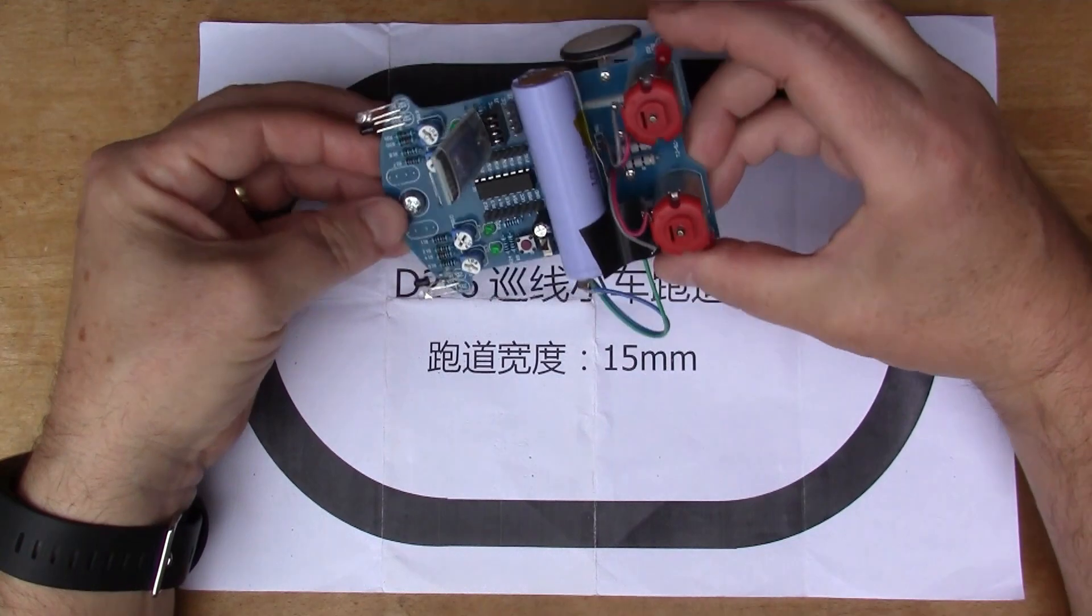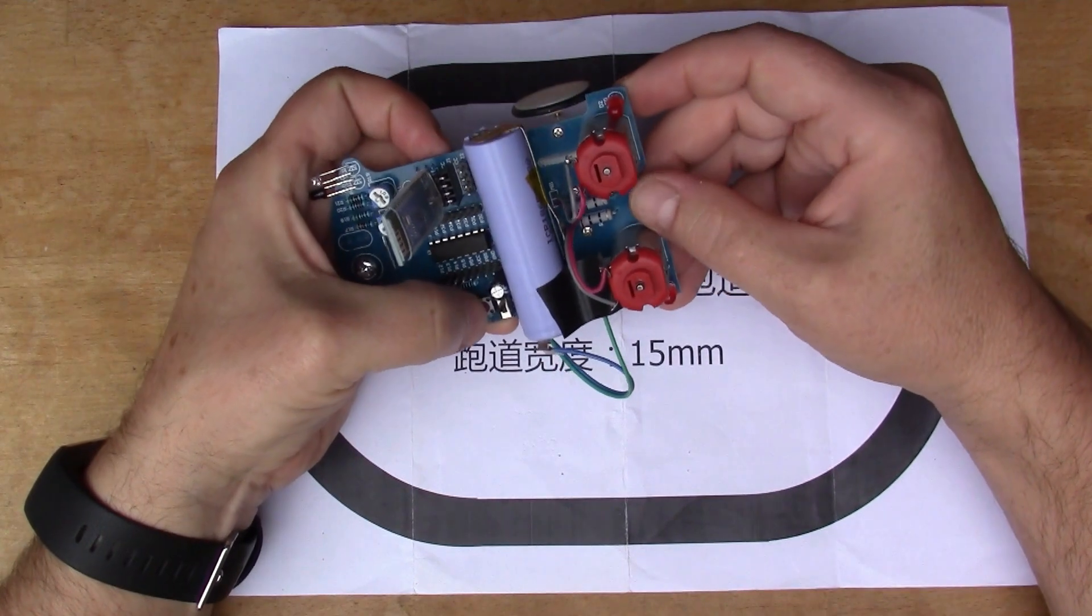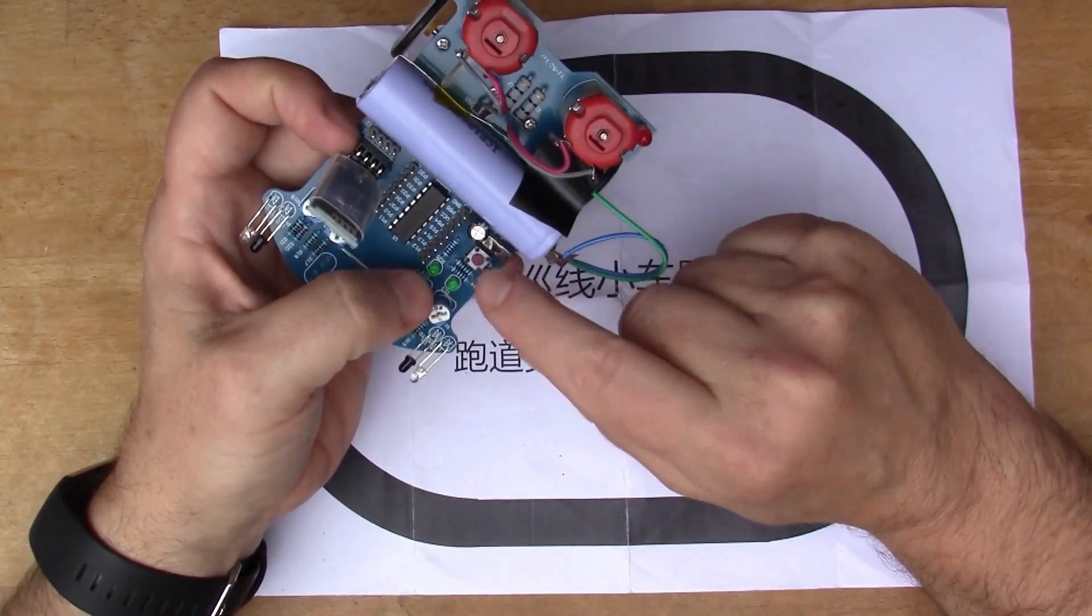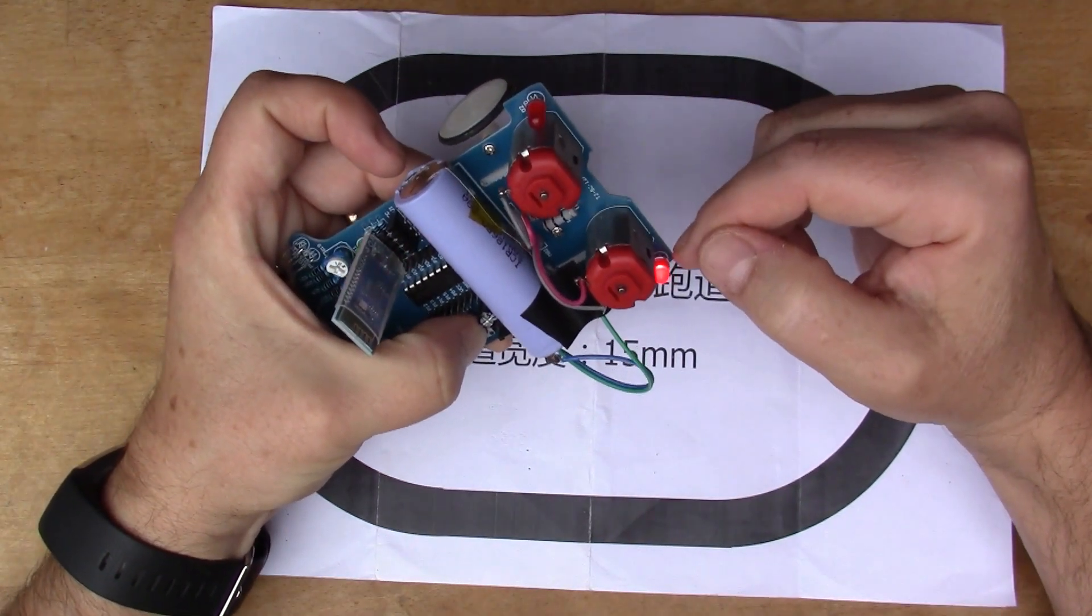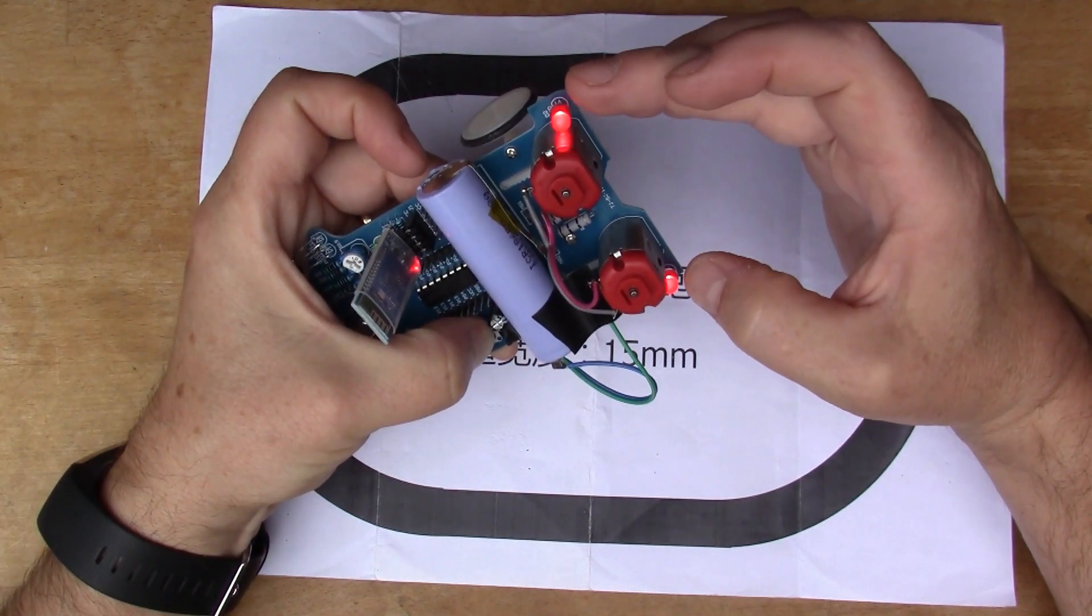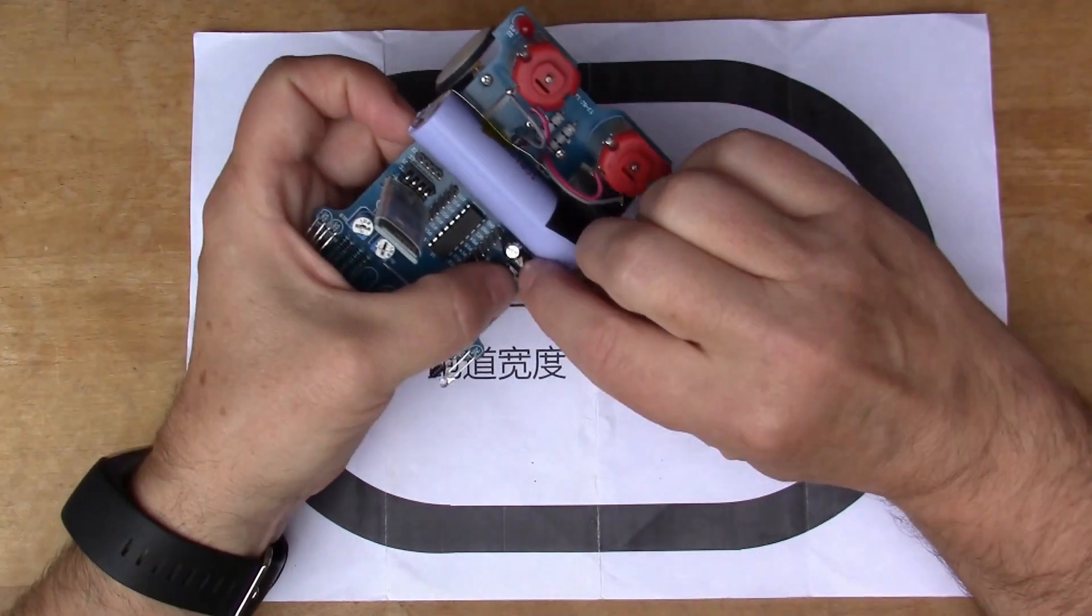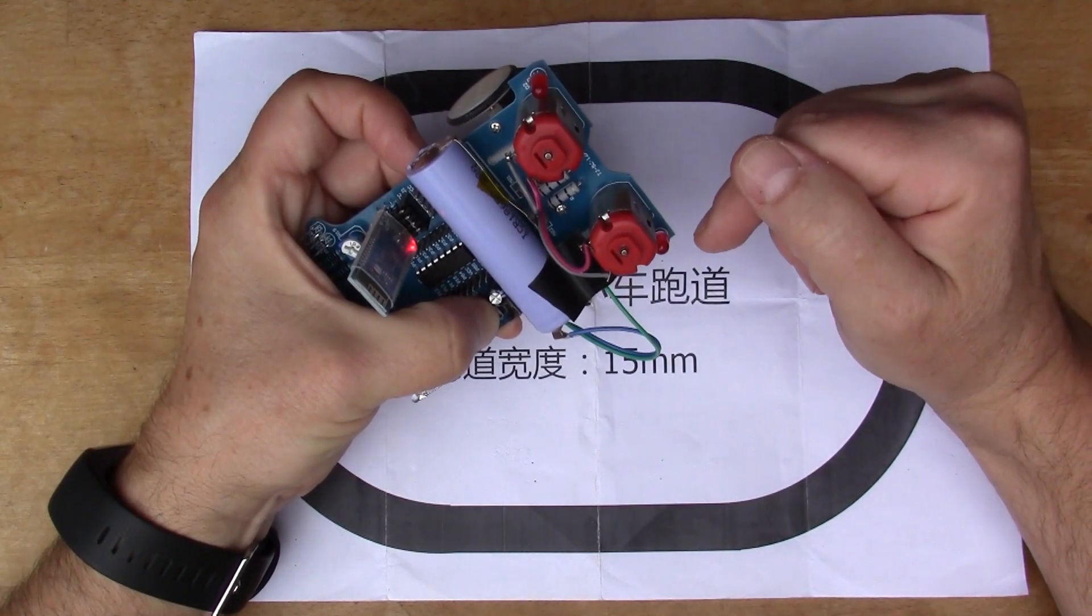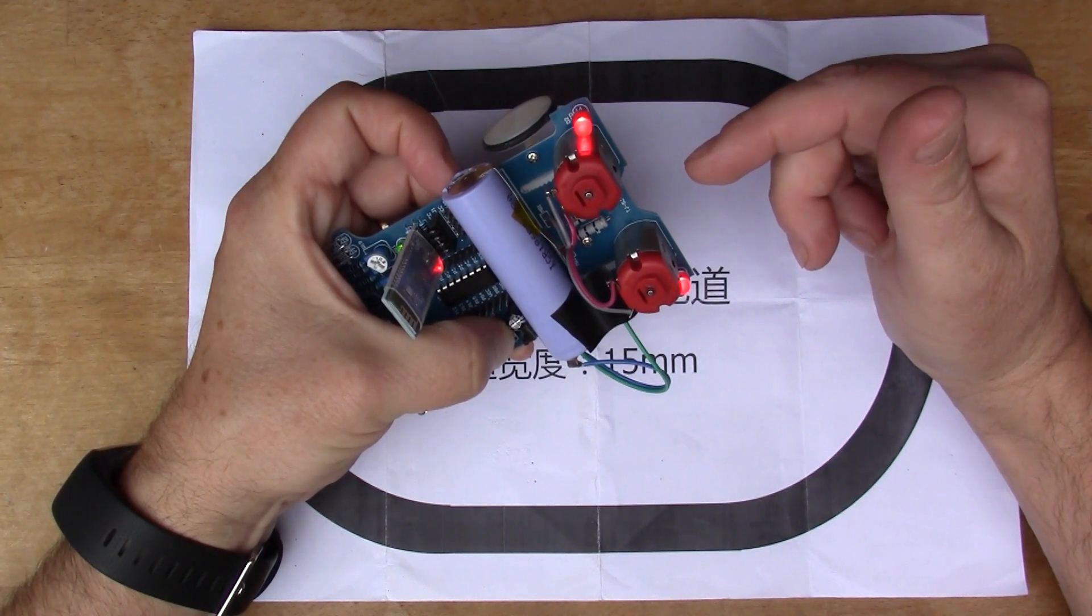Whenever it sees a reflection of the LED in the photodiode, it knows that there's an object in the way and it can use that to turn away. The way you switch between the modes is you hold down this button. I managed to find a replacement button for that rusty broken one. So we hold down the button and we switch on, and what should happen is that the LED comes on—that's line follower, this is object avoidance, and when the two LEDs come on that means it's the Bluetooth control.